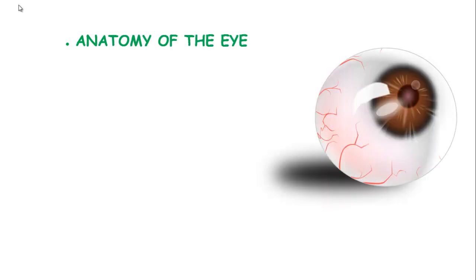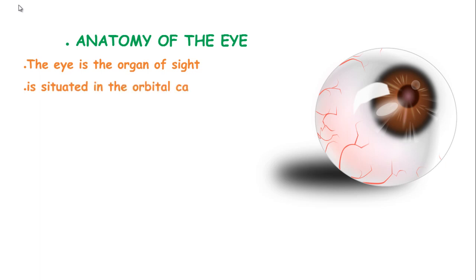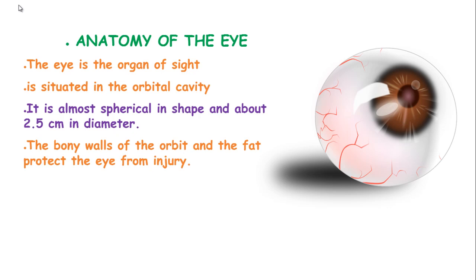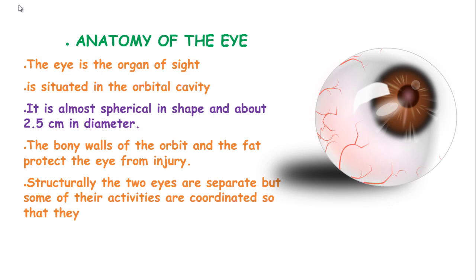Anatomy of the Eye. The eye is an organ of sight and is located in the orbital cavity. It is almost spherical in shape and about 2.5 cm in diameter. The bony walls of the orbit and the fat protect the eye from injury, and structurally the two eyes are separated but some of their activities are coordinated so that they normally function as a pair.